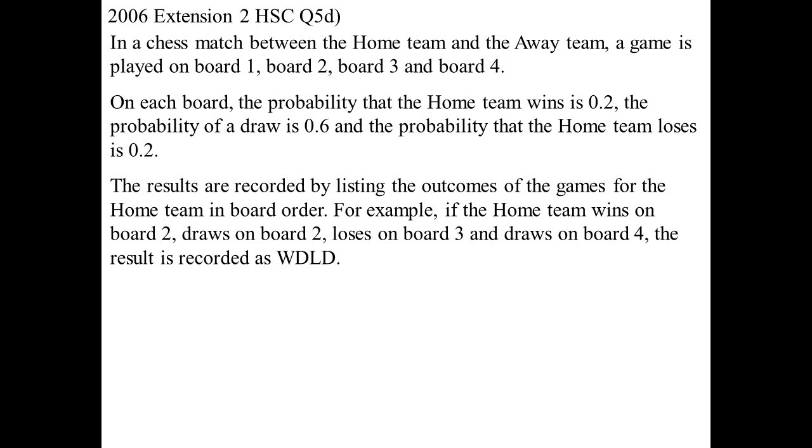Let's do a real good one. Strap yourselves in. In a chess match between a home team and an away team, a game is played on four boards. On each board, the probability that the home team wins is 0.2. Probability of a draw is 0.6. And the probability of the home team losing is 0.2.